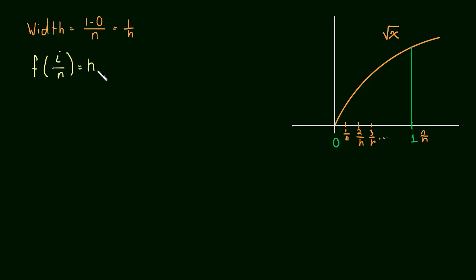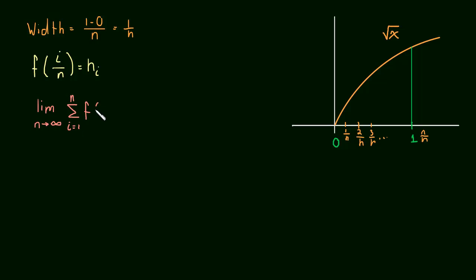This is the height of the i-th rectangle. If we want the height of the second rectangle, we plug in 2 for i and we get f of 2 over n, which is that height there. Now what happens is we're going to write a limit of a sum: the limit as n goes to infinity of the sum as i goes from 1 to n of f of i over n.